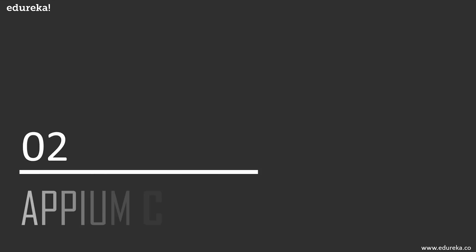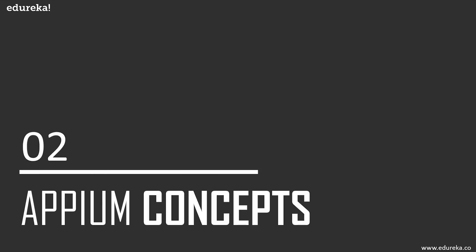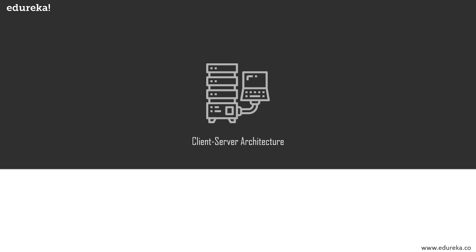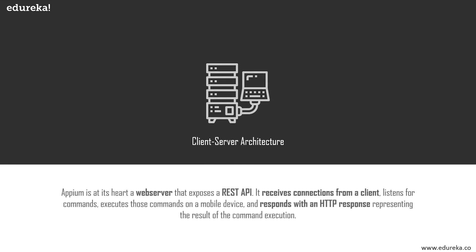Now let's go over some key concepts regarding Appium that will help you understand its architecture with ease. We're going to discuss three key concepts intrinsic to Appium's architecture. The first is client-server architecture. Appium at its heart is a server written using Node.js. When a client sends requests to a server for services being hosted on that server and the exchange is done through a series of requests and responses, the architecture is commonly called a client-server architecture.